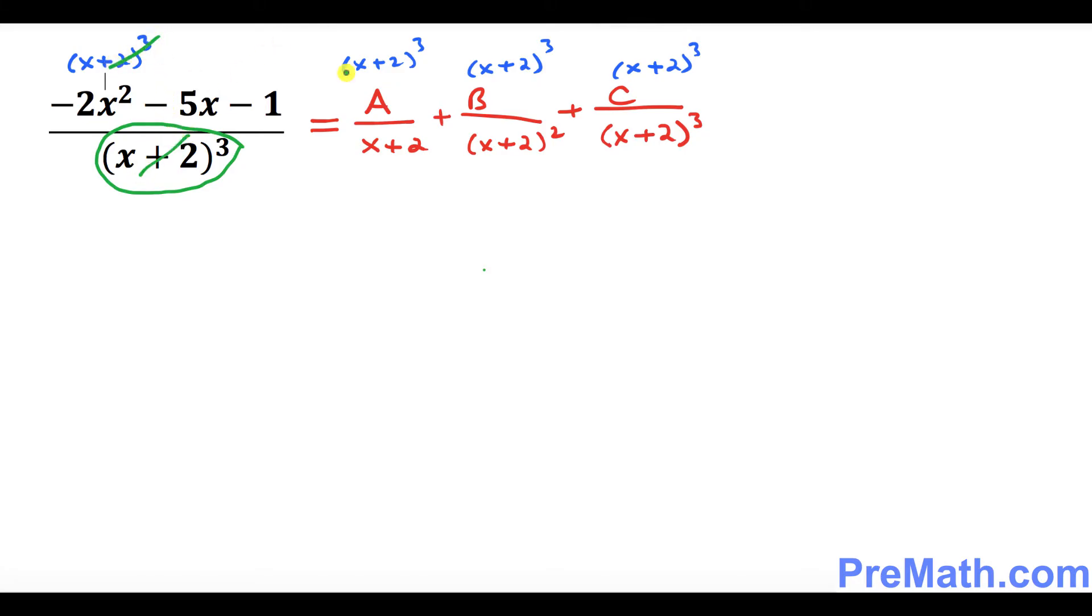So as you can see this cancels over this one, and then what we're going to get is on the left hand side negative 2x squared minus 5x minus 1 equals to one of these factors cancels out. So we got A times x plus 2 squared, plus B times x plus 2, as you can see, and finally you can see this whole thing cancel with this one. So we got plus C. I want to call this equation number one.